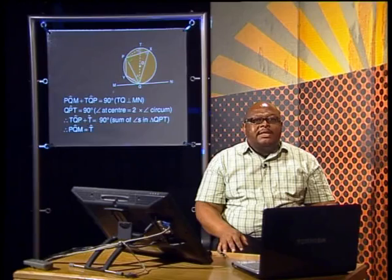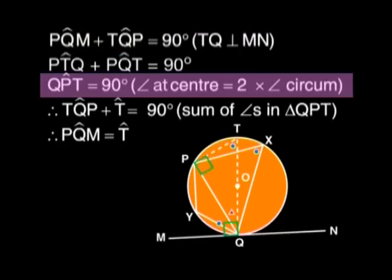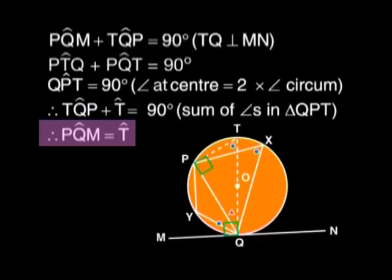Let's write this down formally. Angle PQM plus angle TQP equals 90 degrees because TQ is perpendicular to MN. Angle QPT is 90 degrees because the angle at the center is double the angle at the circumference. Therefore in triangle QPT, the angles at Q and T add up to 90 degrees, which leaves us with angle PQM equal to angle T. Angle T is also equal to angle PXQ because they are angles in the same segment subtended by chord PQ. Therefore angle PXQ equals angle PQM.